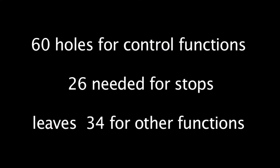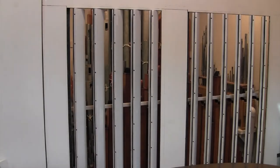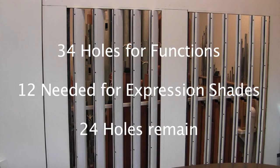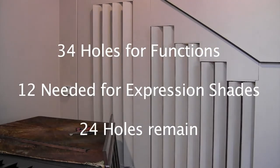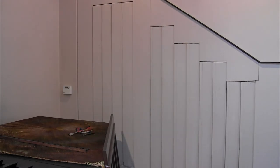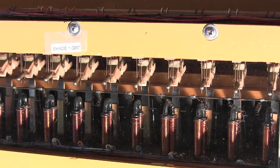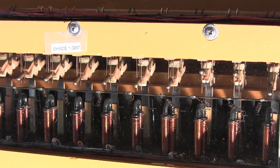Since it takes 26 holes to control the stops, that leaves 34 holes for other functions. Twelve more holes control two sets of swell shades. Six holes for each set. Six holes control six toggle switches. These are always moved in sequence to open or close the shades.